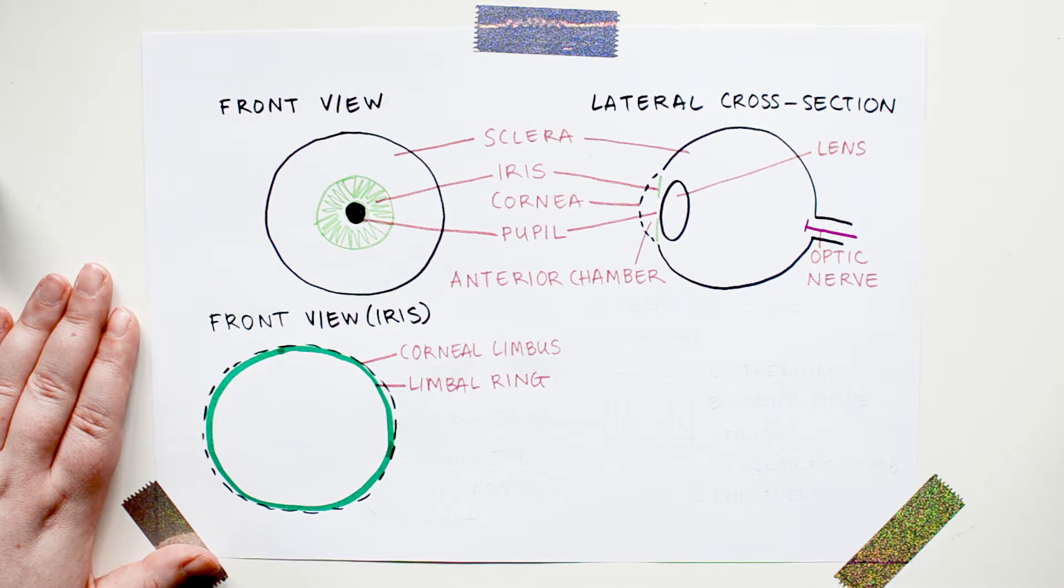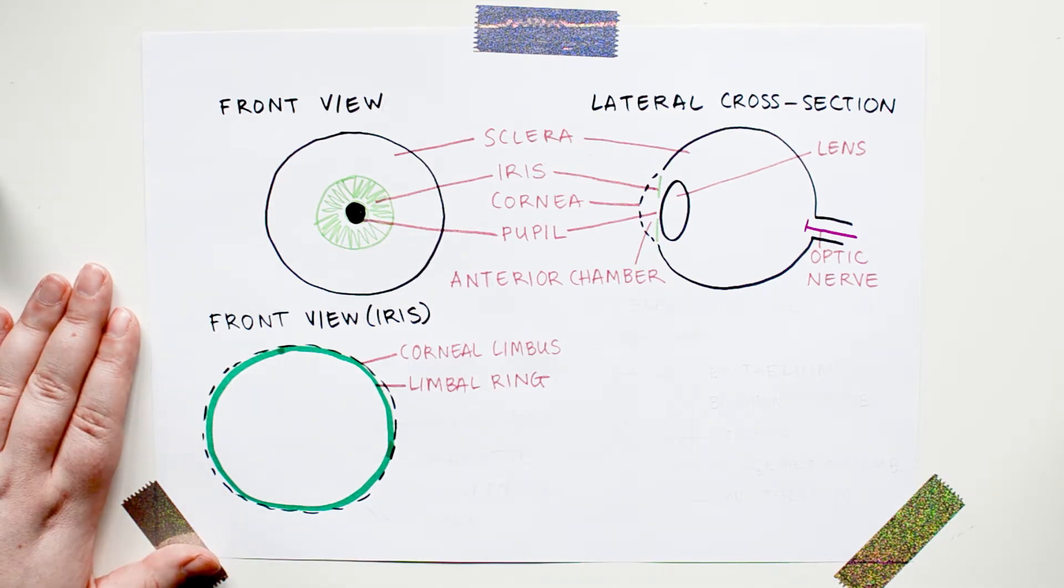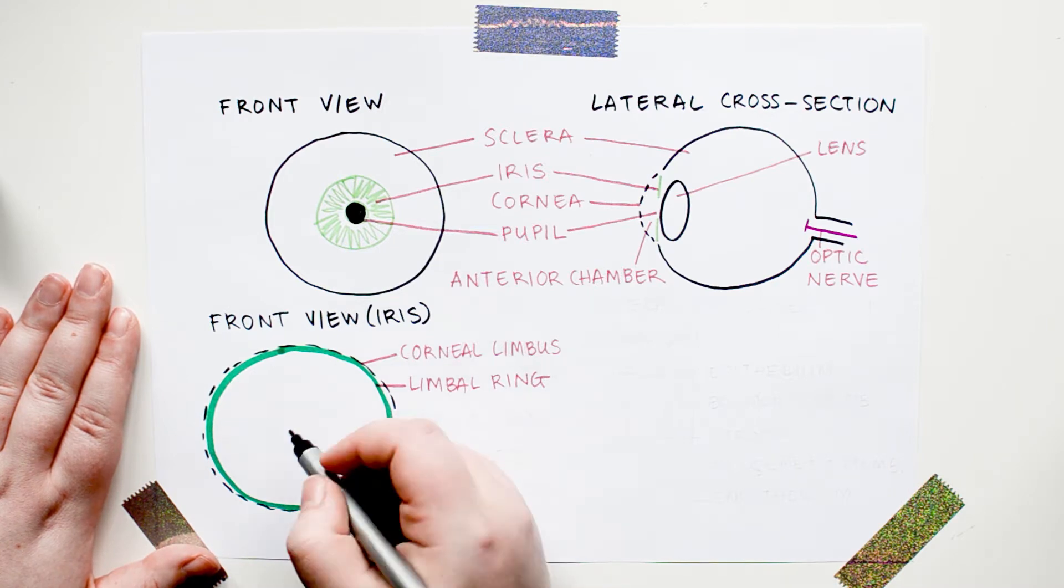The limbal ring can look thinner or thicker, but pretty much everyone has it. If you didn't have one, it would mean that there's some big problem with the anatomy of your eye, which would make you have huge vision problems, so trust me, you would already know about all this.